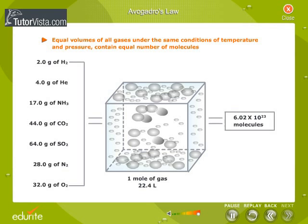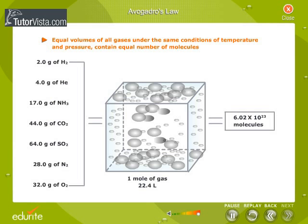Observe the elements and their atomic weights listed on the left-hand side. Though they differ in their atomic weights, they occupy the same volume of 22.4 liters each and represent one mole of the respective gases. Also, they all contain the same number of molecules of 6.02 into 10 power 23.